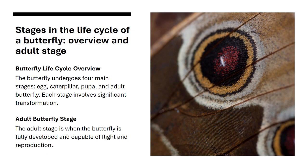The butterfly's life cycle has four main stages: egg, caterpillar, pupa, and adult butterfly. Each stage transforms the insect, with the adult stage being when the butterfly is fully developed and ready to fly and reproduce.